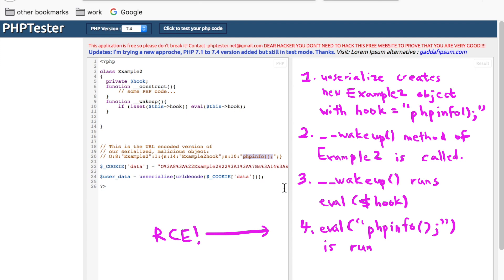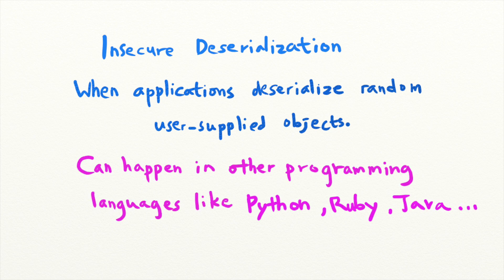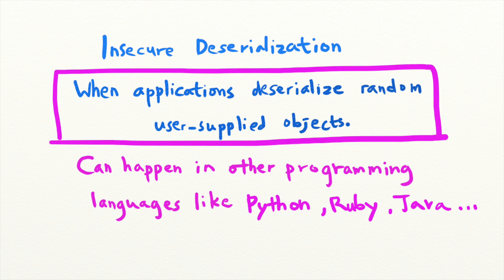Insecure deserialization affects many other programming languages such as Python, Ruby, and Java. And the mechanisms of insecure deserialization work slightly different in different programming languages, but the basic idea remains the same. When you deserialize arbitrary objects from the user, you can accidentally allow them to manipulate variable values and execute arbitrary code. These vulnerabilities are extremely dangerous and can allow attackers to gain full control over an application or a machine.